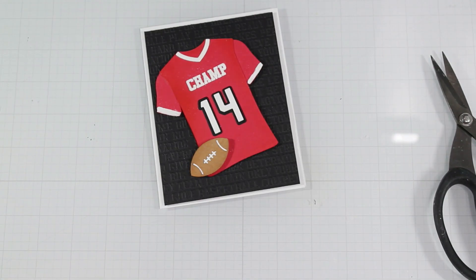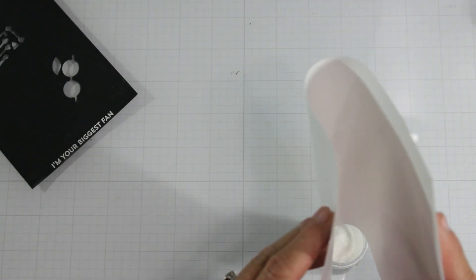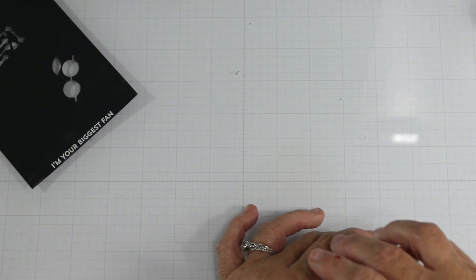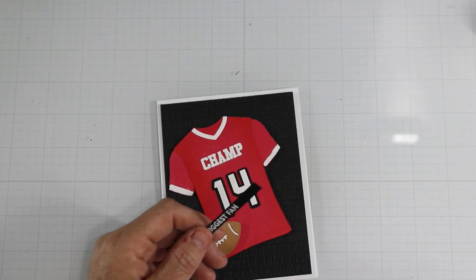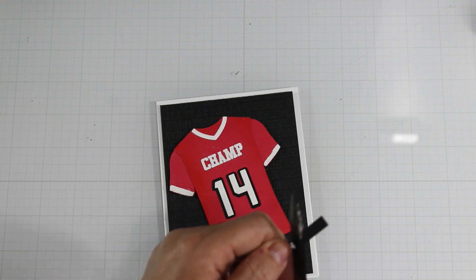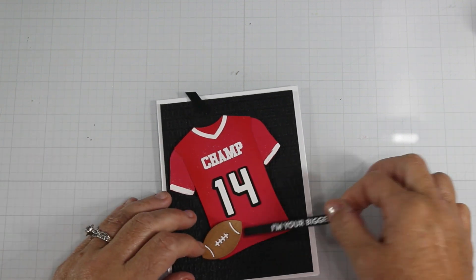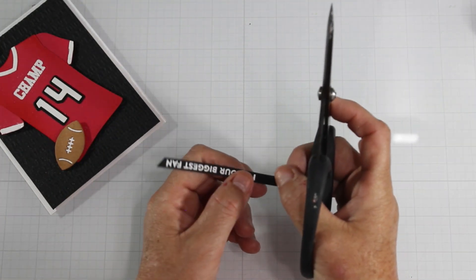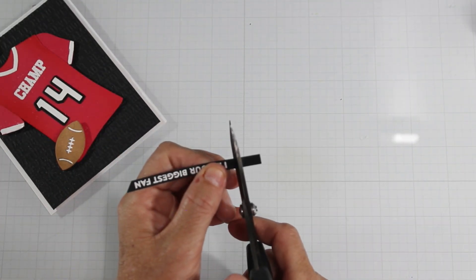Here's where I made a little bit of a mistake. I glued down my football, and then I decided on my sentiment. Well, my sentiment is way longer than I wanted. So after cutting off the edges, I'm finding that it didn't fit. So I very carefully peeled up the football.